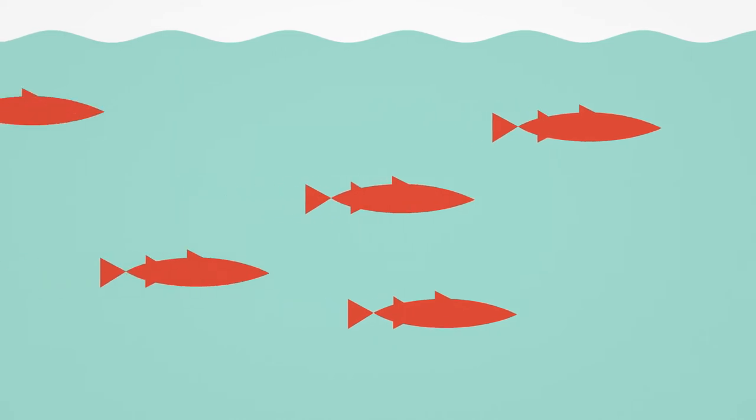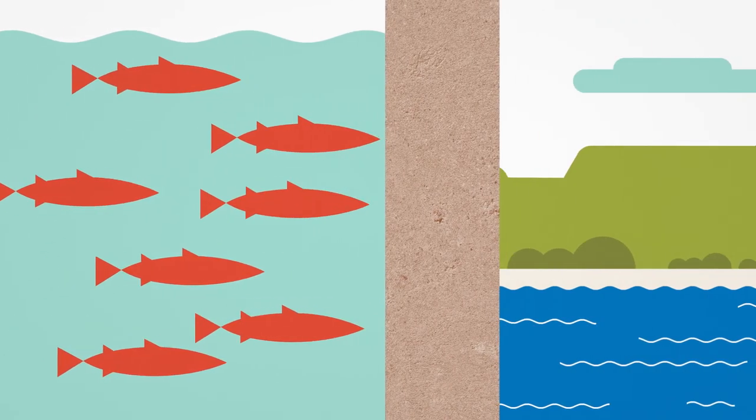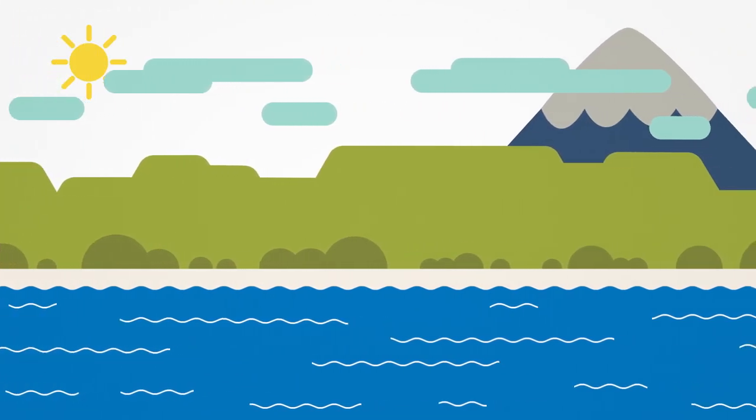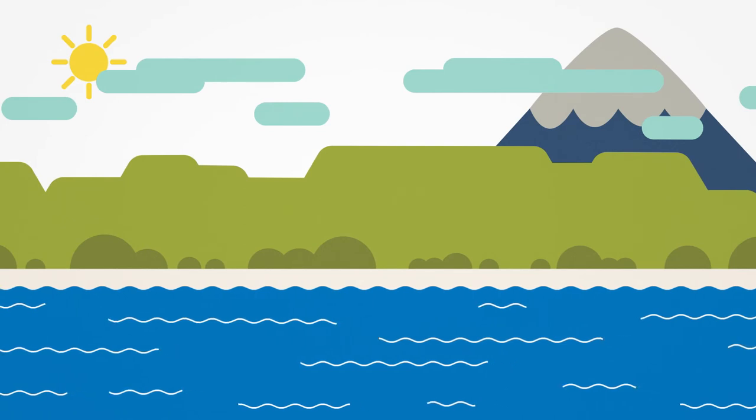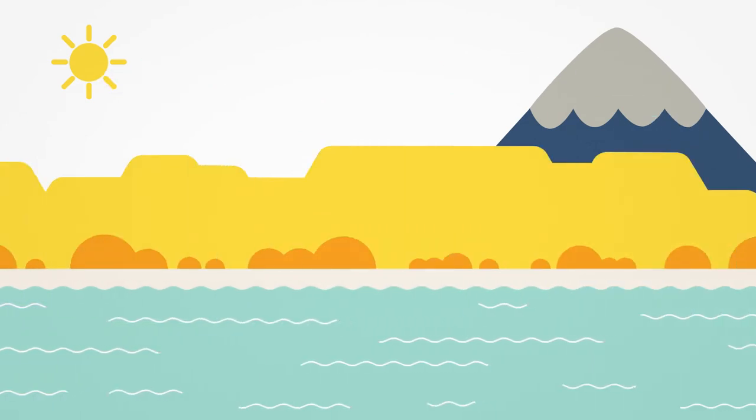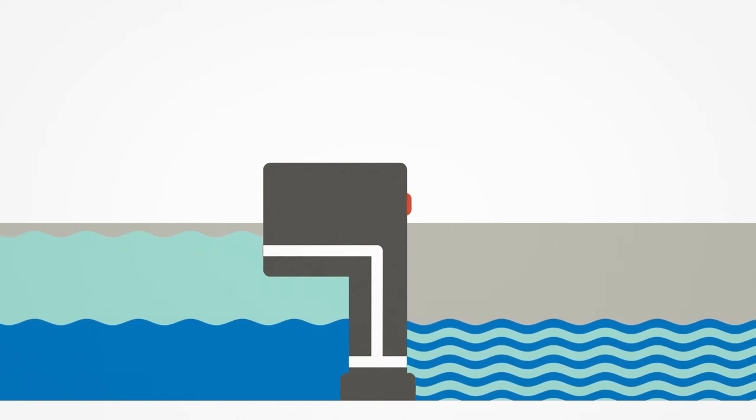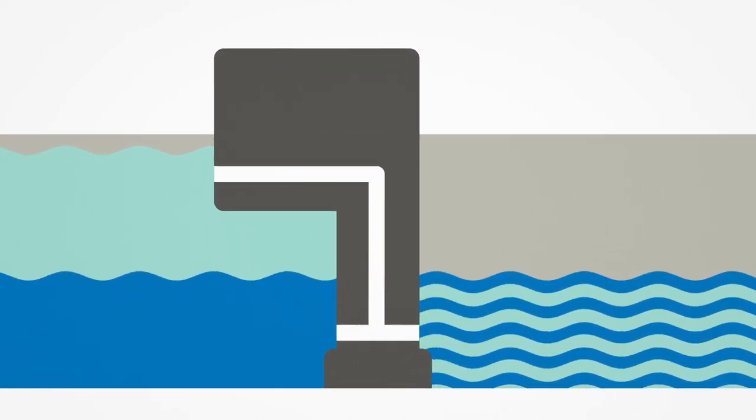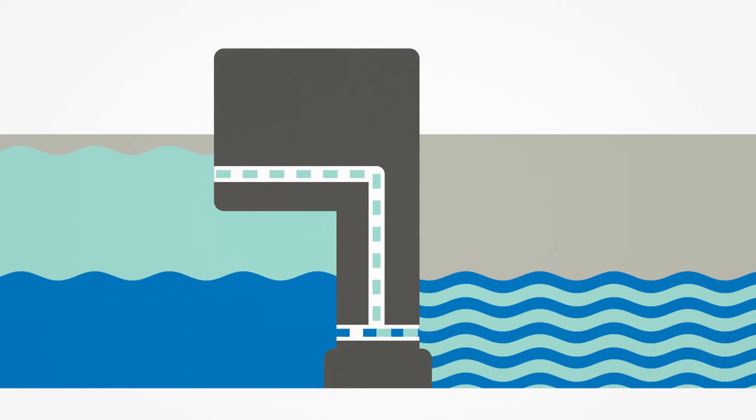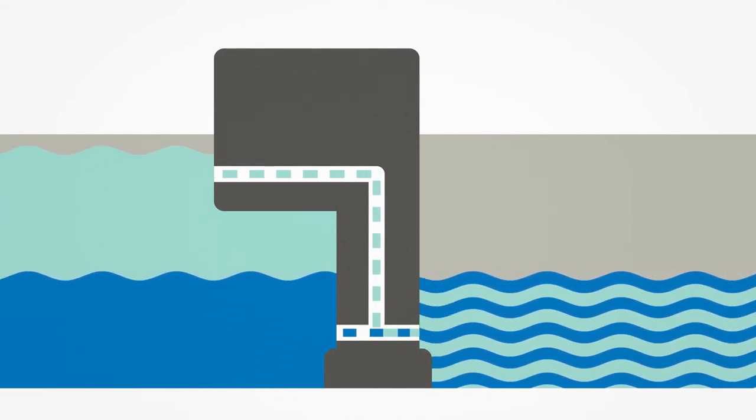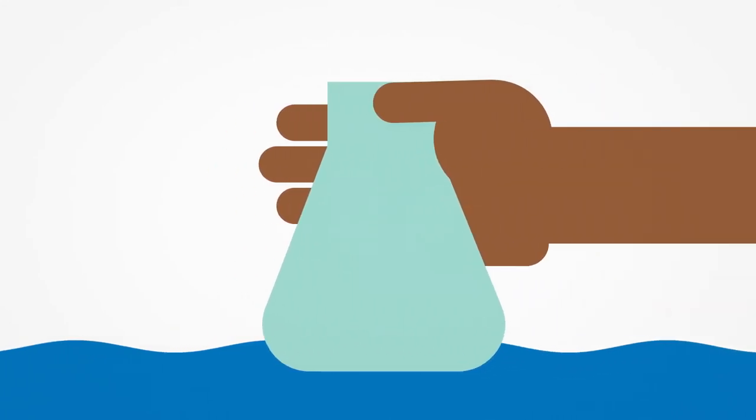Before the new system was built, Round Butte Dam blocked fish passage and created unnatural temperatures downstream, typically colder water in the spring and warmer water in the late summer and fall. Now we can collect the fish to safely transport them around the dam while mixing warmer surface water with deeper cold water, restoring both migration routes and seasonal temperatures to benefit fish.